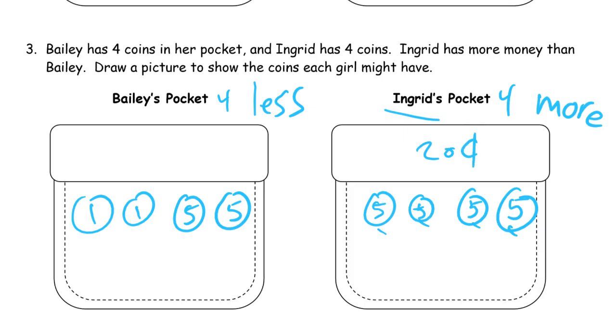And let's say Bailey has 2 pennies and 2 nickels. So let's just make sure it's less than 20: 5, 10, 11, 12 cents. Bailey has less.